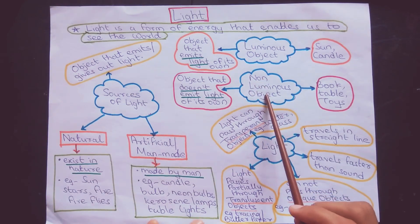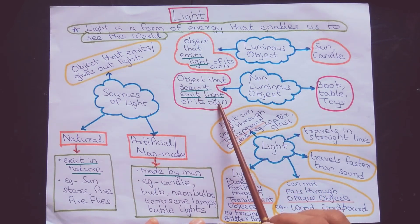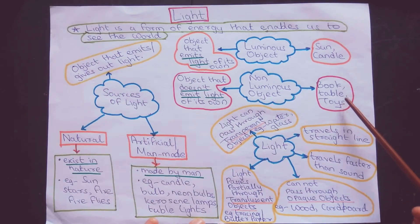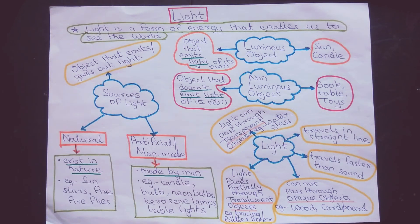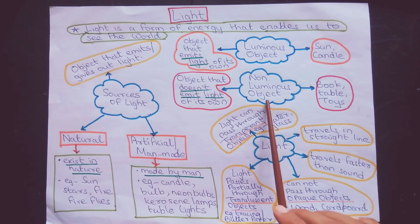Non-luminous objects are objects that do not emit light of their own. That means books, tables, and toys - these objects do not emit light. So, they are known as non-luminous objects.